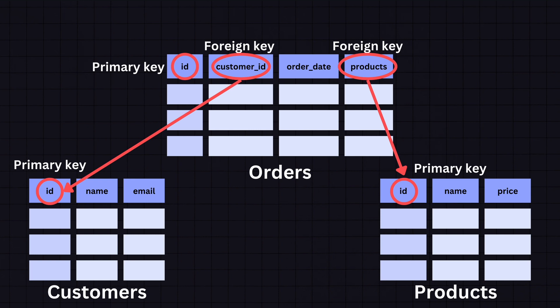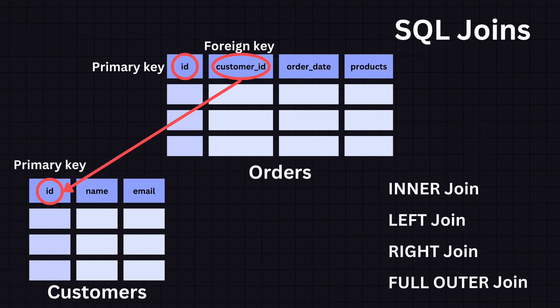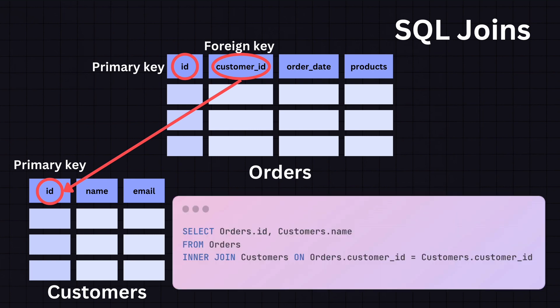Using primary and foreign keys we can join our tables. SQL uses JOIN to combine rows from two or more tables based on related columns between them. The common types of joins are inner join, left and right joins, and full outer join. For example, if we want to join the orders and customers table, we select order ID and customer names from the orders table and do an inner join on customers where the order customer ID equals the customer table's ID. This type of join returns records with matching values in both tables.